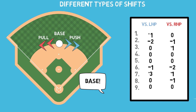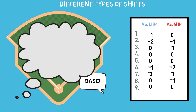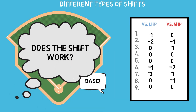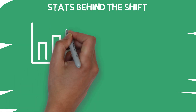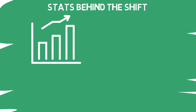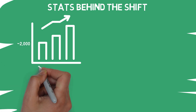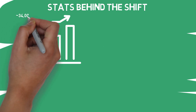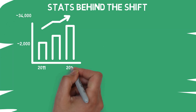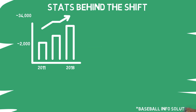Before finishing, I want to take a shot at answering the most important question regarding shifts: do they work? In 2011, there were around 2,000 plays where a shift occurred. Looking back to 2018, nearly 35,000 shifts happened — 17 times more in a span of 7 years. We'll turn to a stat Baseball Info Solutions created to help evaluate the shift: MLB runs saved per 100 shifts. Since 2011, there has been a steady increase from 1.19 runs saved up to 1.71 runs saved in 2018 — a significant boost.